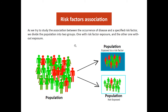If we suspect a risk factor is involved in the development of the disease, we do measurement of association to quantify the strength of relationship between risk factor and disease. We calculate the incidence rate in the exposed group and non-exposed group and compare them. If there is a relationship, we expect the incidence rate in the exposed group to be higher than the non-exposed group.